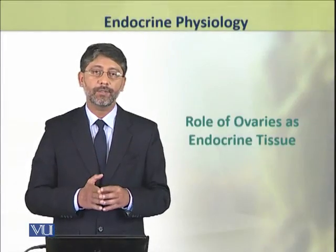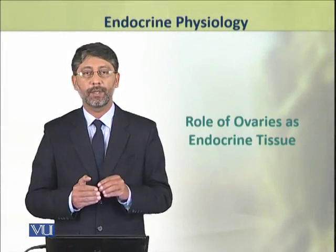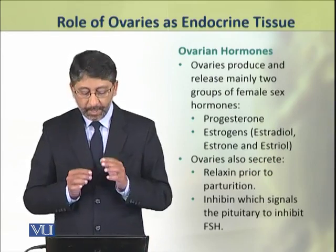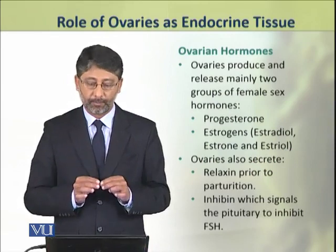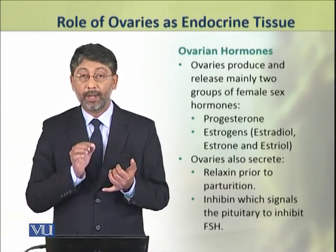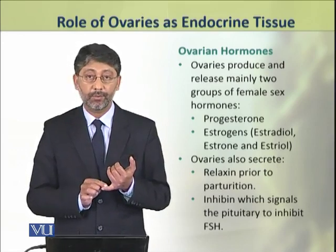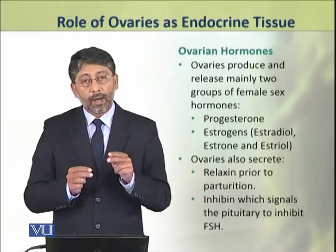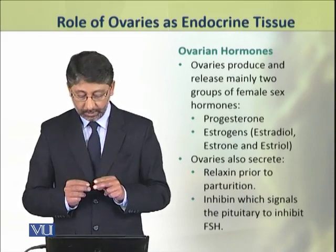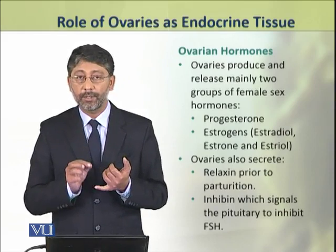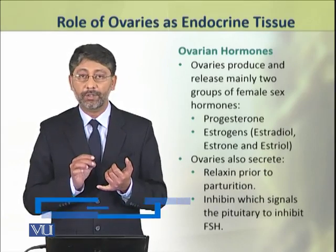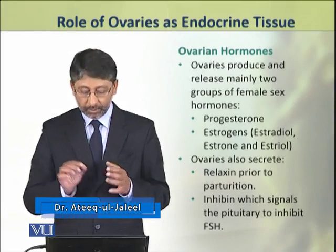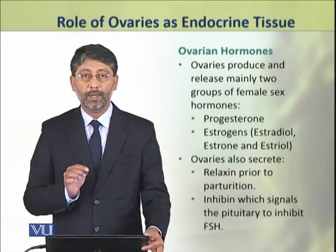Dear students, in this topic we shall discuss the role of ovaries as endocrine tissue. Ovaries produce and release mainly two groups of female sex hormones: progesterone and estrogens. Estrogens include estradiol, estrone, and estriol. Ovaries also secrete two other hormones — relaxin, which is produced just prior to parturition or childbirth, and inhibin, which signals the pituitary to inhibit the release of follicle stimulating hormone.